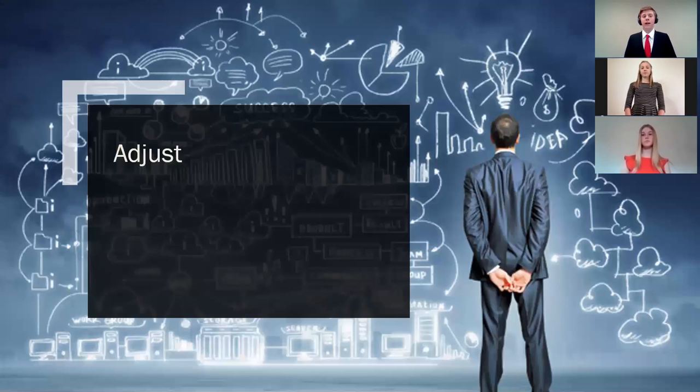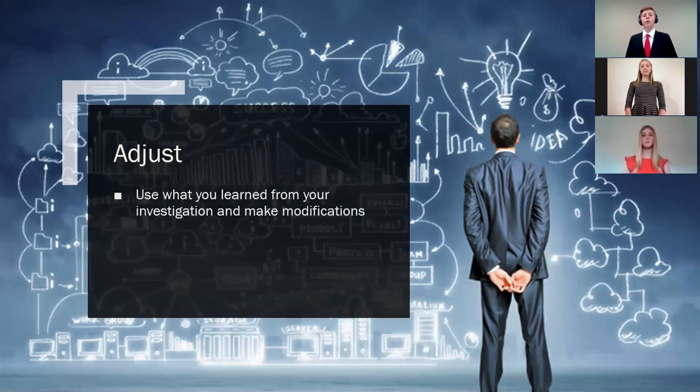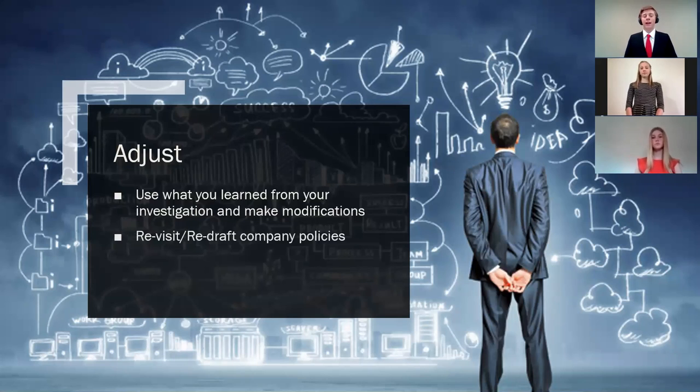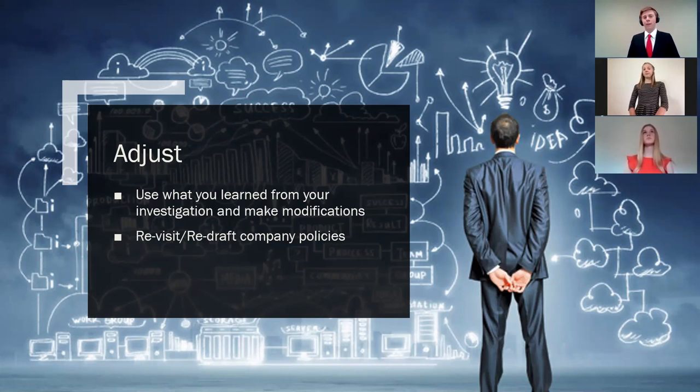The third phase of our plan is the adjustment phase. The main goal of the adjustment period is to take what you learned during your investigation and make some changes based on what you uncovered. During this phase, the news broadcasting companies need to adjust their policies. This stage gives the company time to restructure any obsolete, misleading, or outdated corporate guidelines.